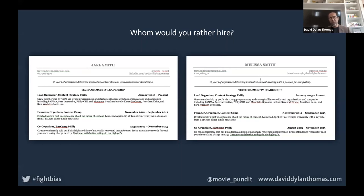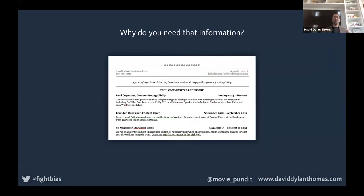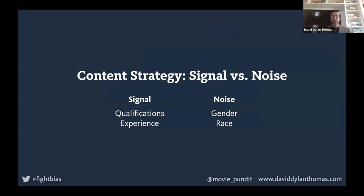Study after study has shown this. They've even seen that people of color who 'whiten' their resumes to remove any notions of blackness can actually improve their odds. So here's the question: why do we need that information? If you're the hiring manager, what is the name telling you that helps you decide whether to hire that person? Think of it as a content strategy problem — signal versus noise. The signal, the things that help you make the decision, are the qualifications and experience. The noise getting in the way is the gender or race you're reading into the name.